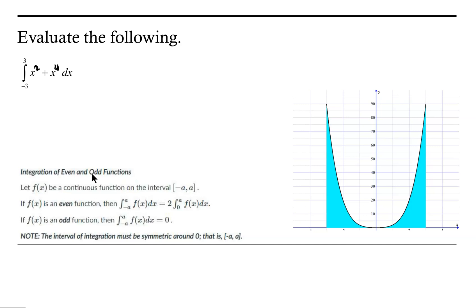Just a quick reminder: even functions are functions such that if you evaluate the function at negative x, that is the same as evaluating the function at x. Odd functions are functions such that if you evaluate the function at negative x, you get the opposite of what you get if you evaluate the function at x.